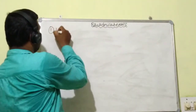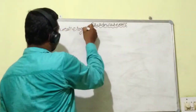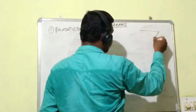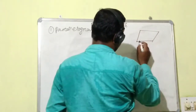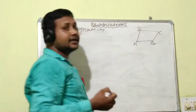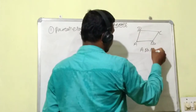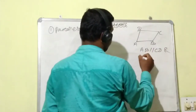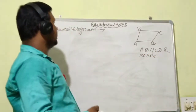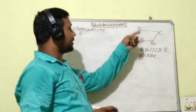First we will discuss about parallelogram. The definition of parallelogram is: the quadrilateral whose opposite sides are parallel to each other. That is, AB is parallel to CD and AD is parallel to BC. This is the parallelogram.